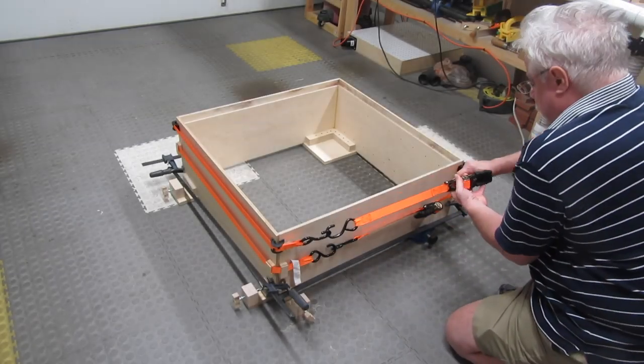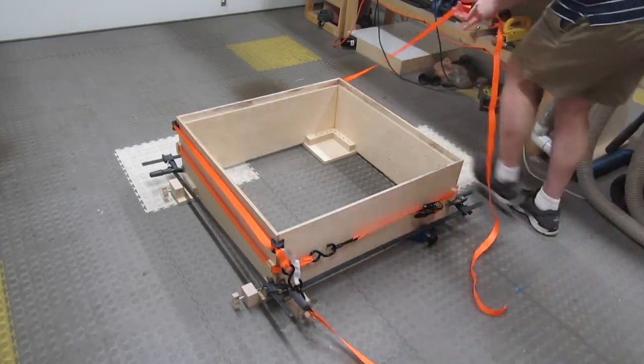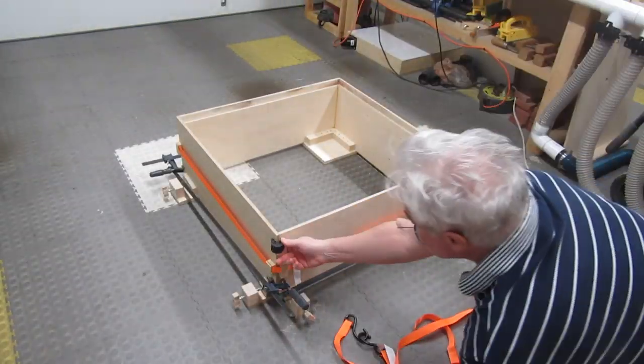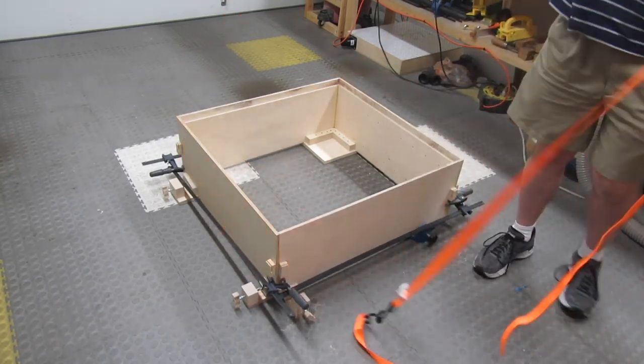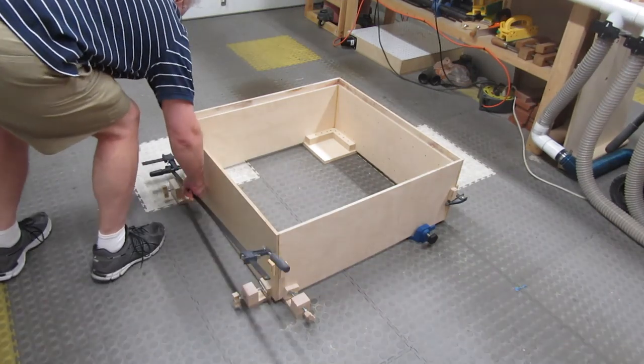Taking off the ratcheting strap with the Bessie clips was of course a piece of cake. So was taking off the second ratcheting strap, but I'm not done with that yet. And of course the F-clamps are pretty easy too.